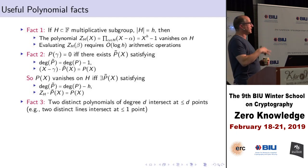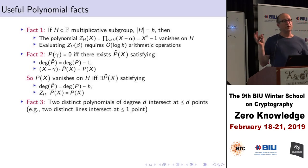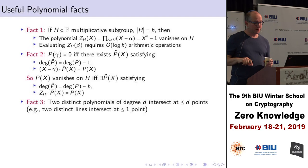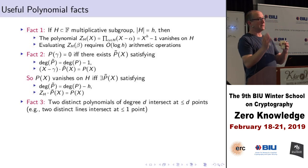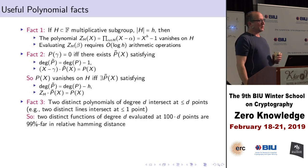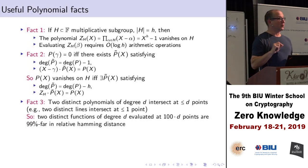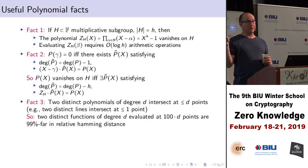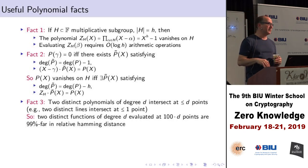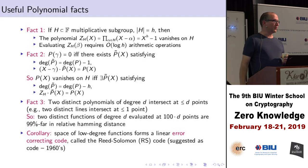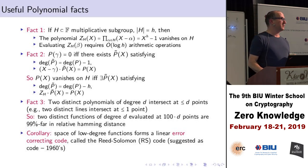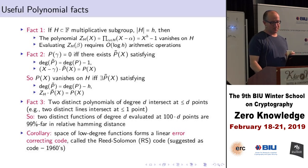Fact 3: two distinct polynomials of degree d can intersect at at most d points. For example, two lines intersect at most at one point, two parabolas at most at two points. So if you take two functions that are evaluations of distinct degree-d polynomials and evaluate them at 100 times the degree many points, you get evaluation tables that are 99% far from one another in relative distance. This is the Reed-Solomon error-correcting code, introduced in the 1960s, which found its way into CDs and DVDs in the 1990s — and STARKs uses it a lot.